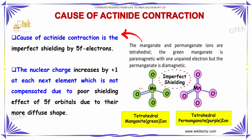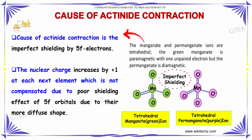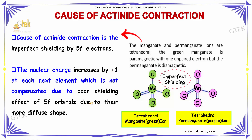The cause of actinide contraction is the imperfect shielding by 5f electrons. This is the most important point. The nuclear charge increases by plus 1 at each successive element, which is not compensated due to the poor shielding effect of the 5f orbitals because of their more diffuse shape. This results in imperfect shielding across the series.